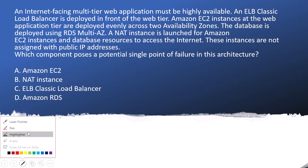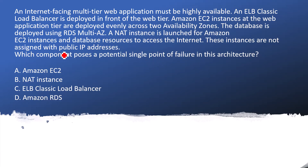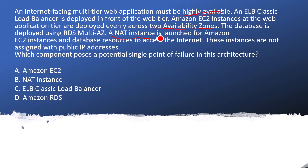Let me mark the hints. The first hint is that this is a high availability setup. The next hint is that a NAT instance is launched for Amazon EC2 instances and database resources to access the internet. You can see that this question is related to availability zones and we are talking about high availability. However, they have mentioned that there is only one NAT instance configured.